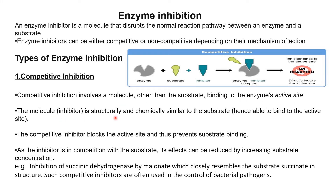Competitive inhibition involves a molecule other than the substrate binding to the enzyme's active site. This inhibitor molecule is structurally and chemically similar to the substrate, so it is able to bind to the active site. The competitive inhibitor blocks the active site and thus prevents substrate binding.